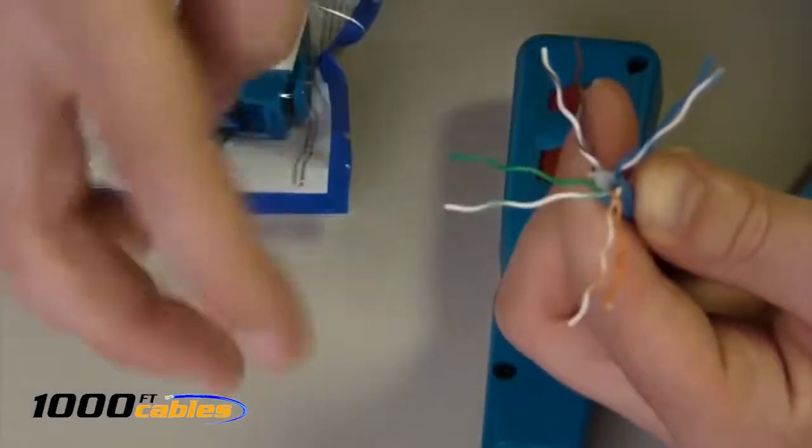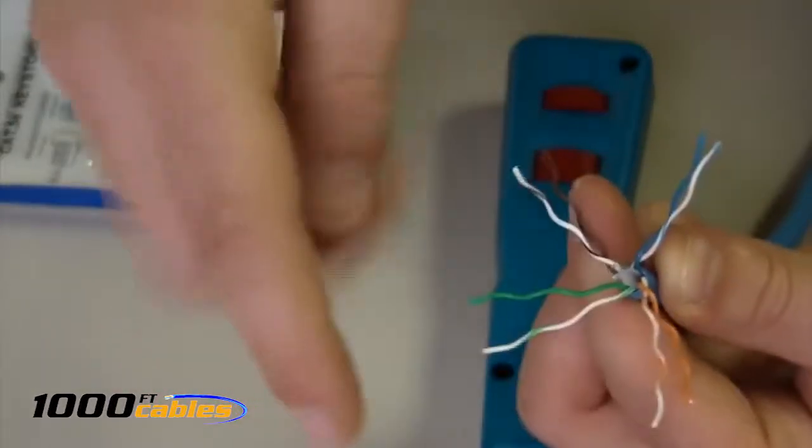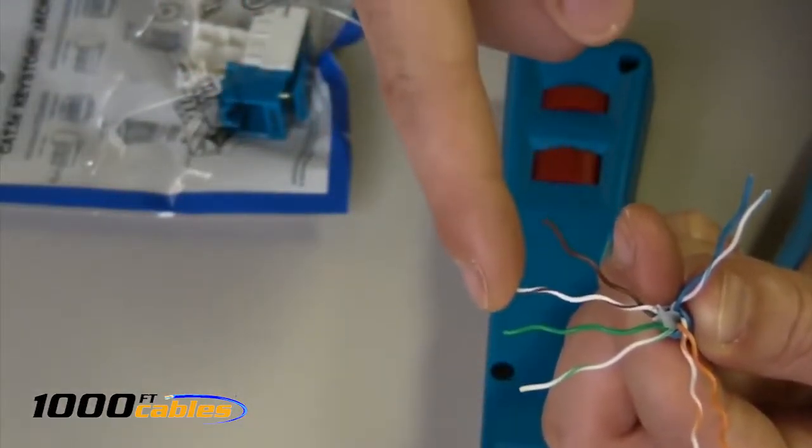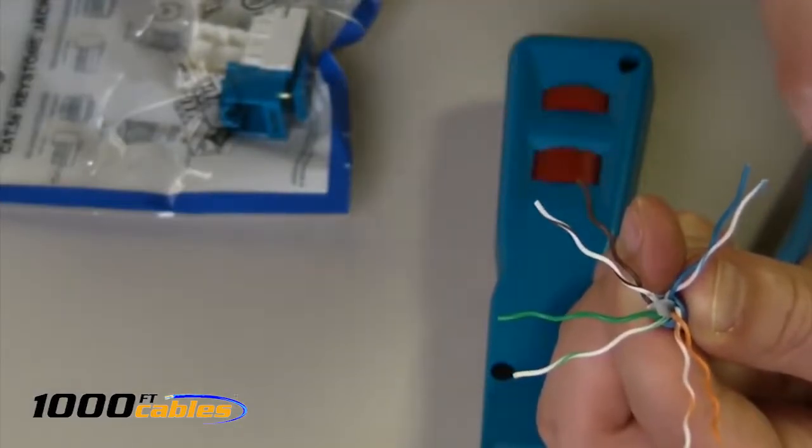We have our solid orange, our white with orange stripe, white with green stripe, solid green, white with brown, solid brown, white with blue, and solid blue.